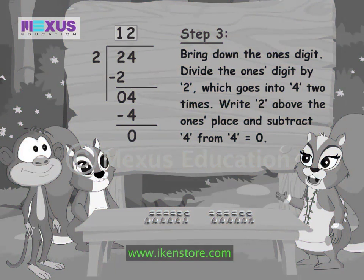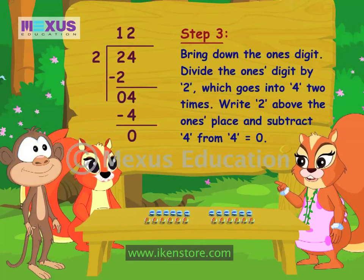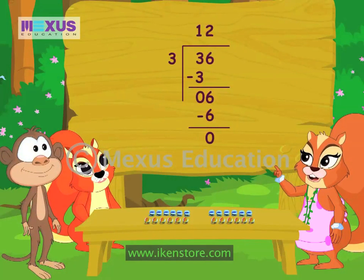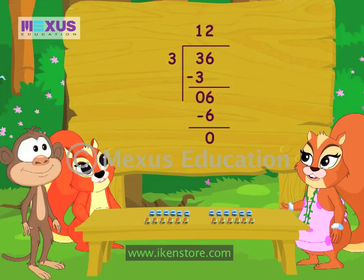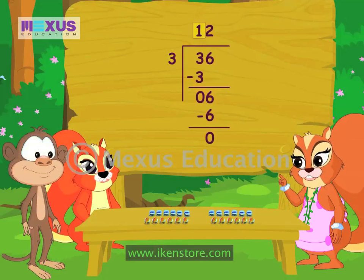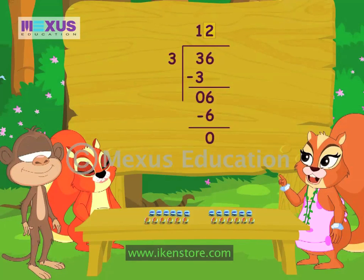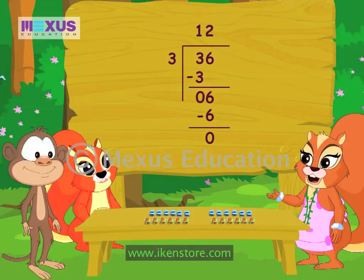So, the answer is 12. As you can see, children, we got the same answer as earlier. However, the long division method helps us to get the answer in a much shorter time. Here is how we can quickly divide 36 by 3 using the same method. 3 goes one time into the tens 3, and 2 times into the ones 6, to give us the answer 12.